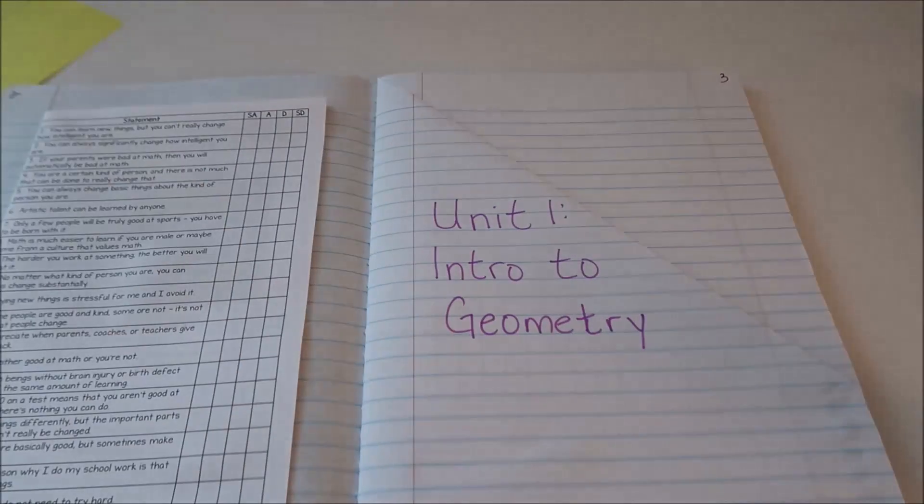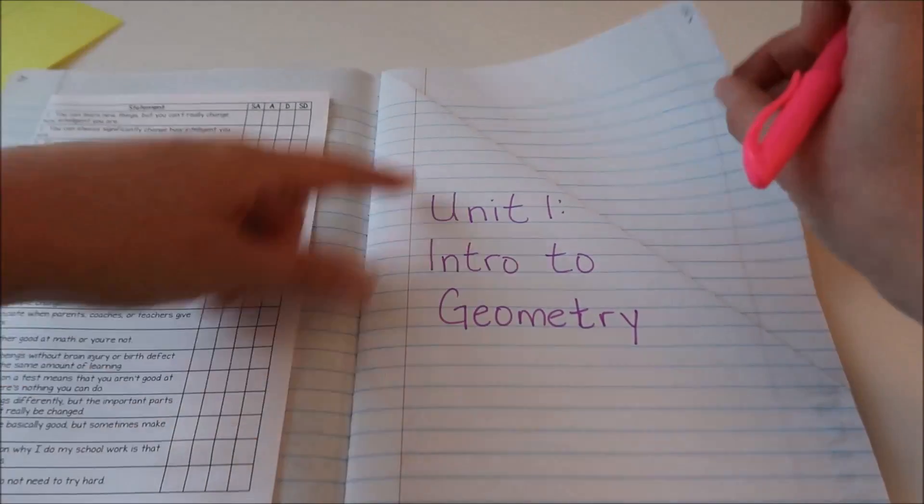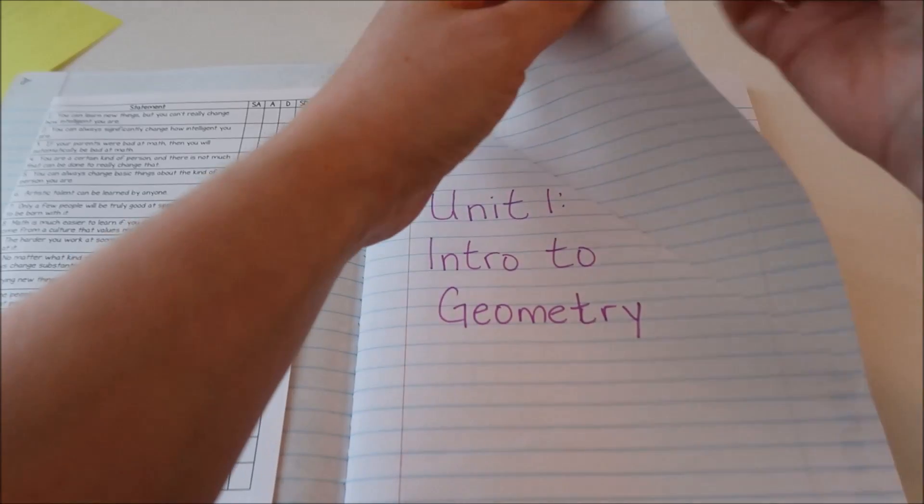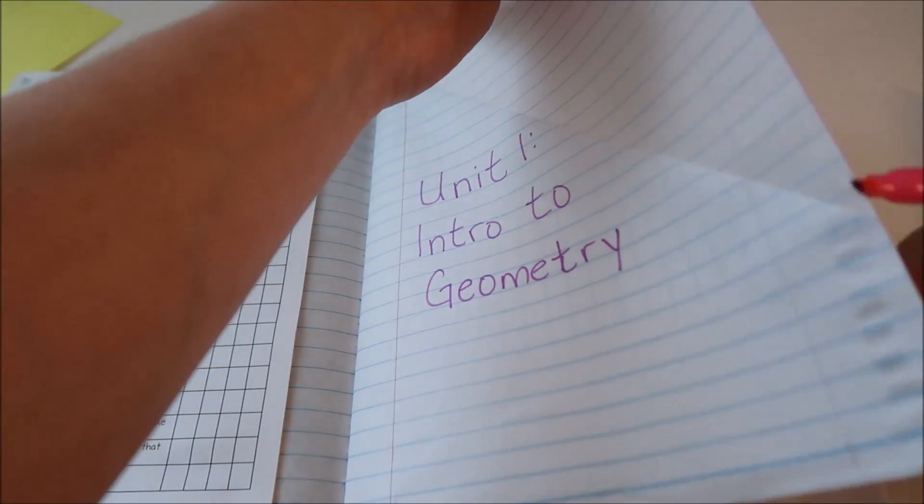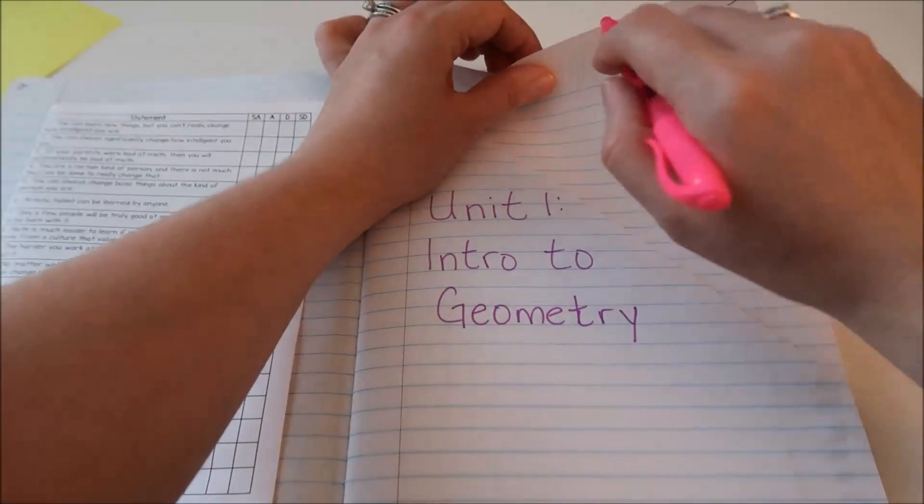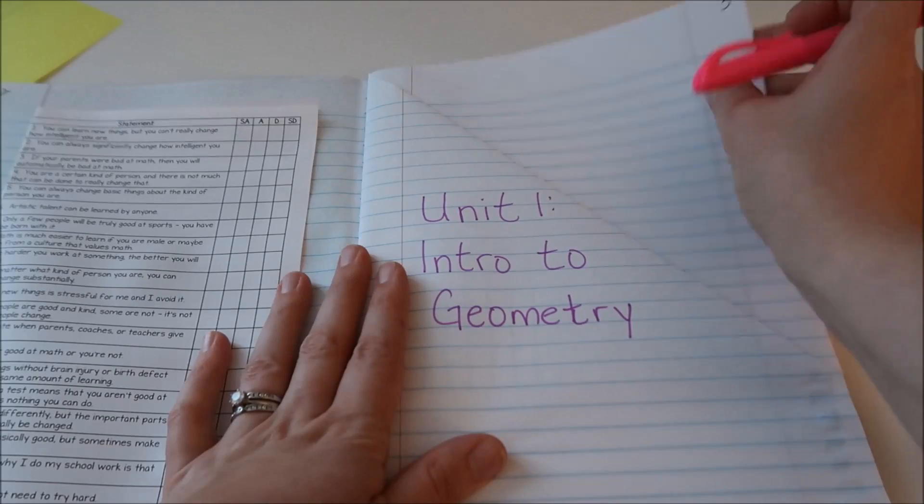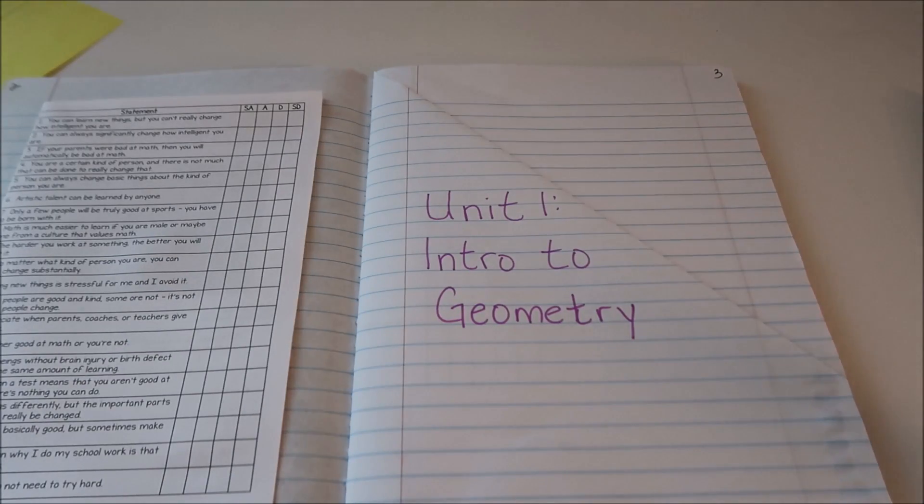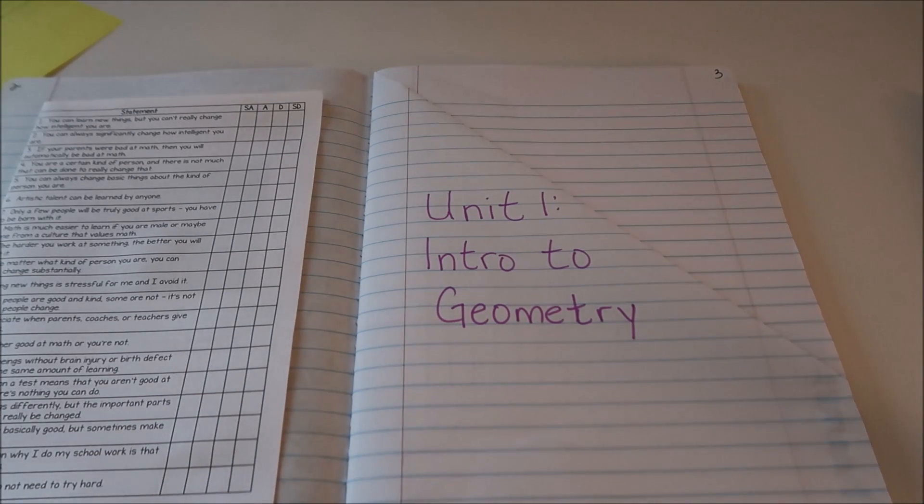And my unit one is intro to geometry so I like to put a little heading there. And then what I like to do is lift up my page and run my highlighter along the edge of it. What that will do is color the edge of the page which you won't be able to see on camera, but it colors the edge of the page and makes it easier to find the separation of units just looking at the notebook from the top or the side.